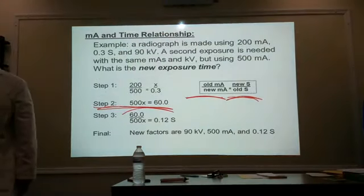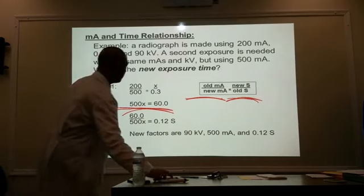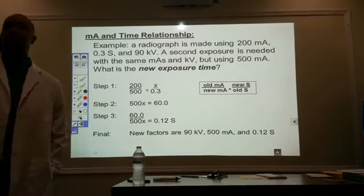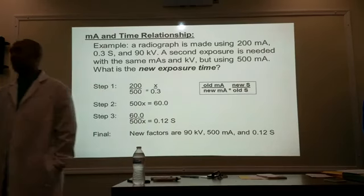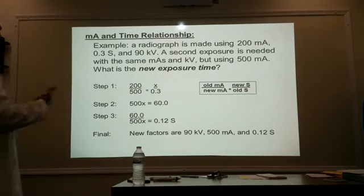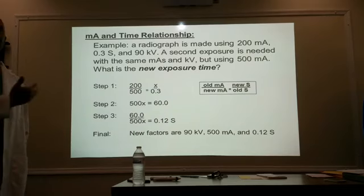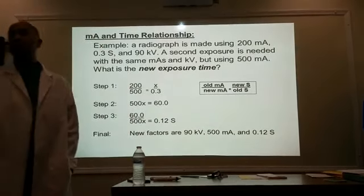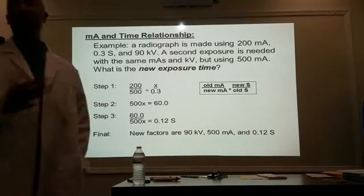Here's an example: a radiograph is made using 200 MA at 0.3 seconds at 90 kV. However, a second exposure is needed with the same mAs and kV but using 500 MA. Where's my new exposure time? Basically, I want a quicker exposure time. What am I going to be using a quicker exposure time for? Kids? The elderly? Somebody with Parkinson's who can't control muscle twitching? I want a quick exposure time because it will eliminate any type of motion on my film.